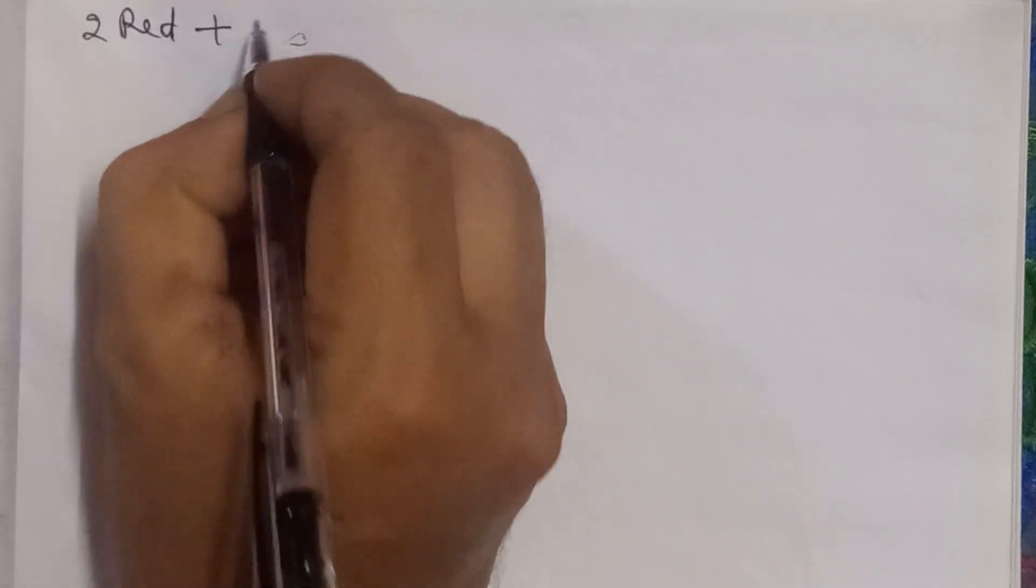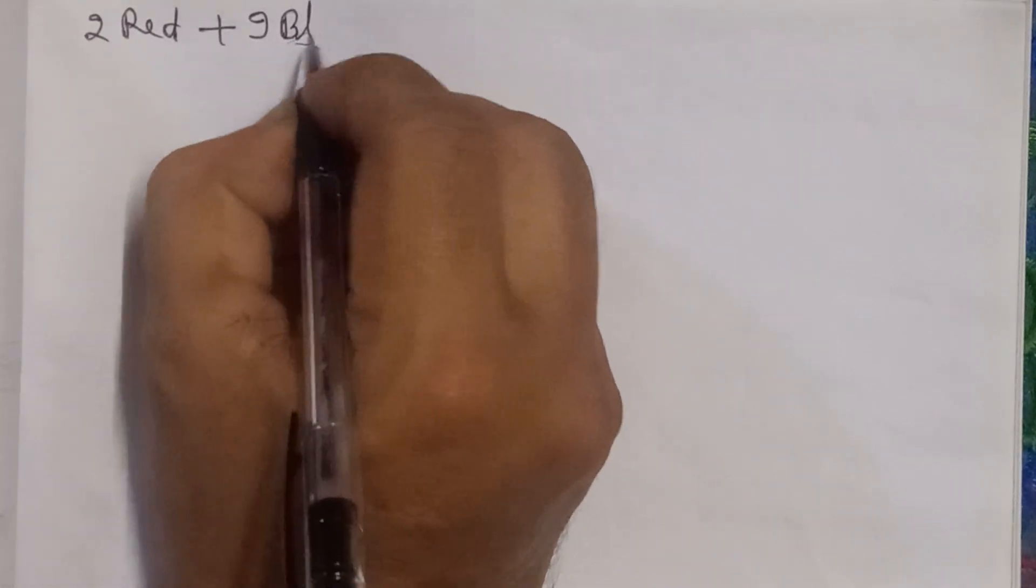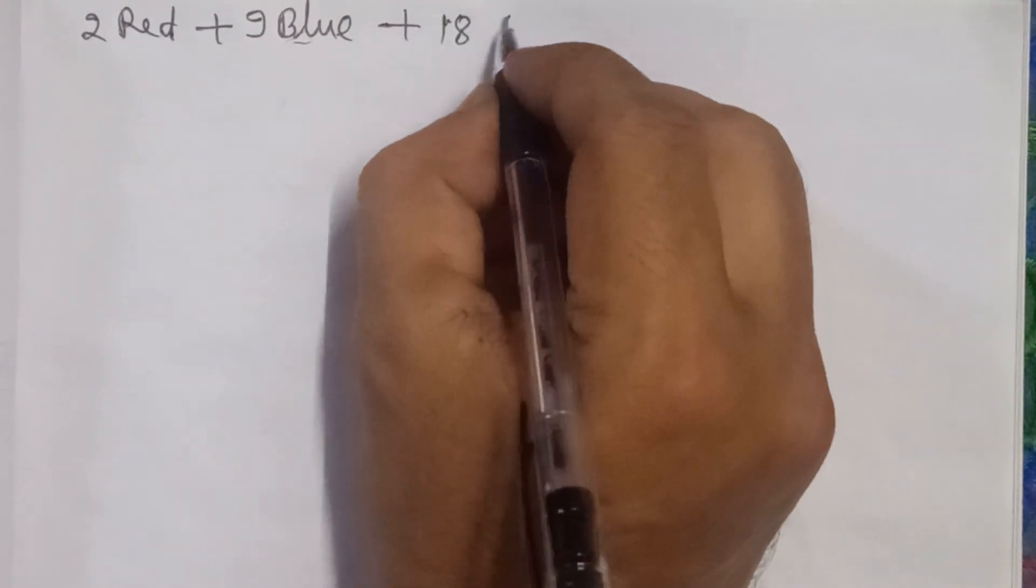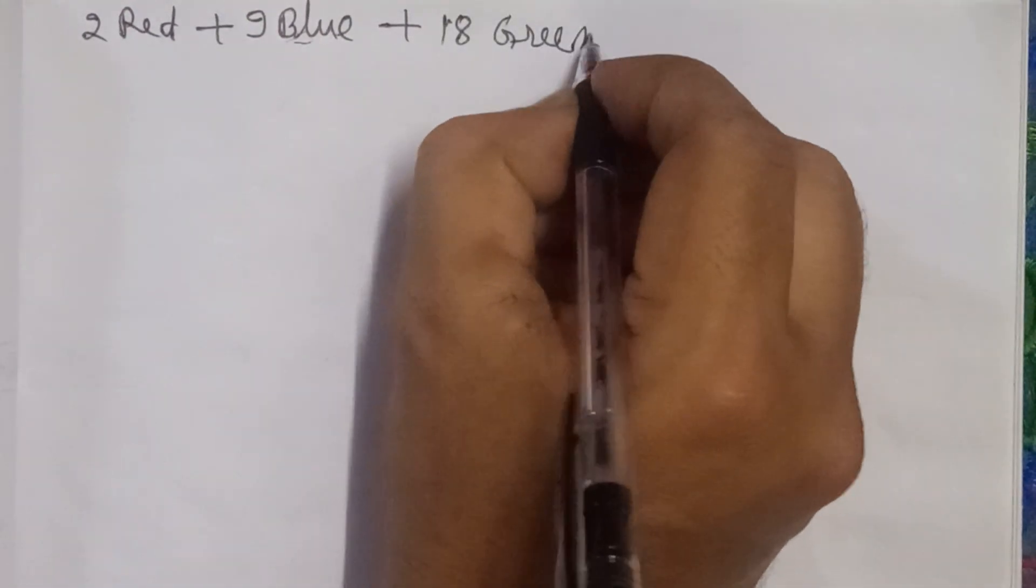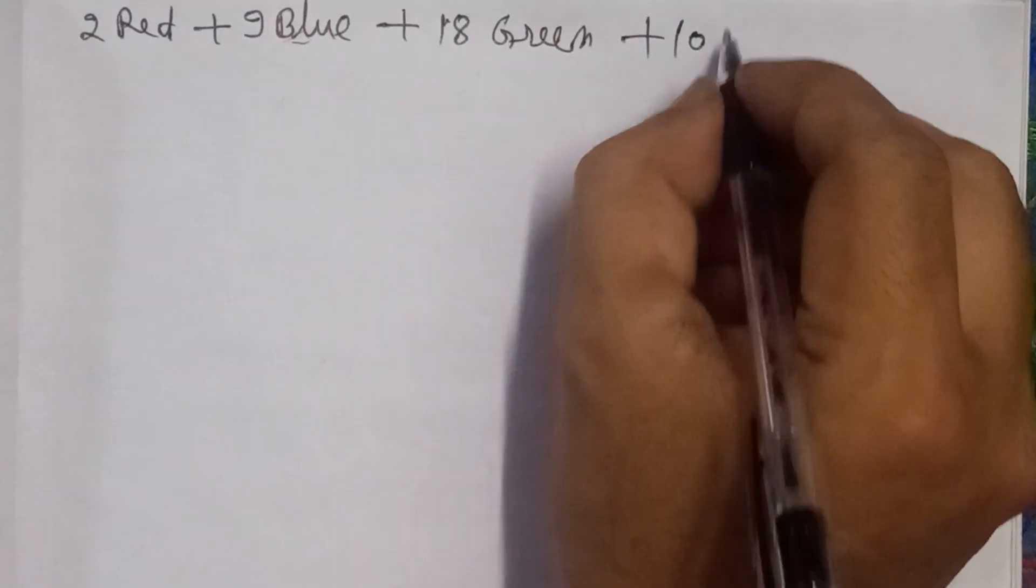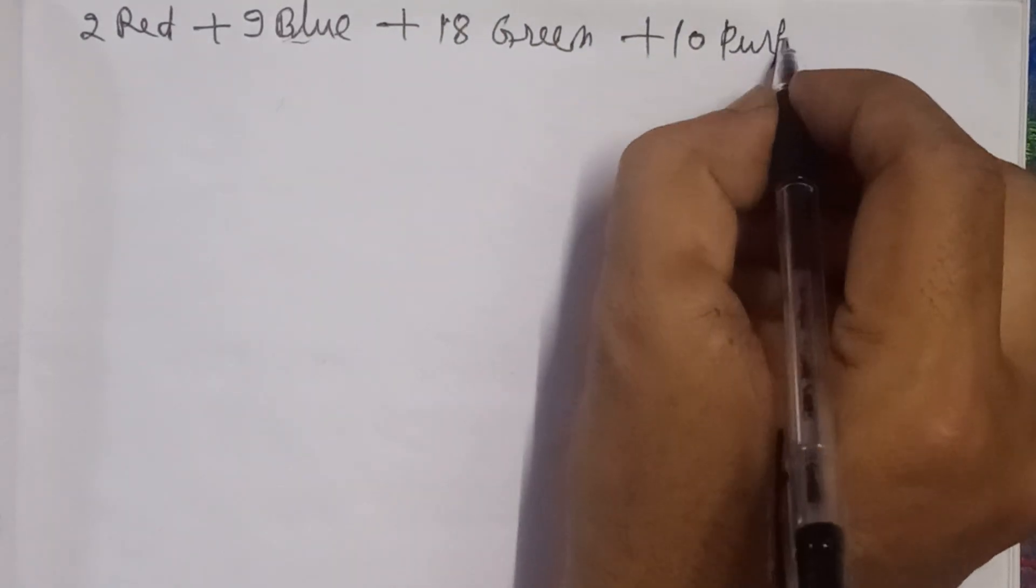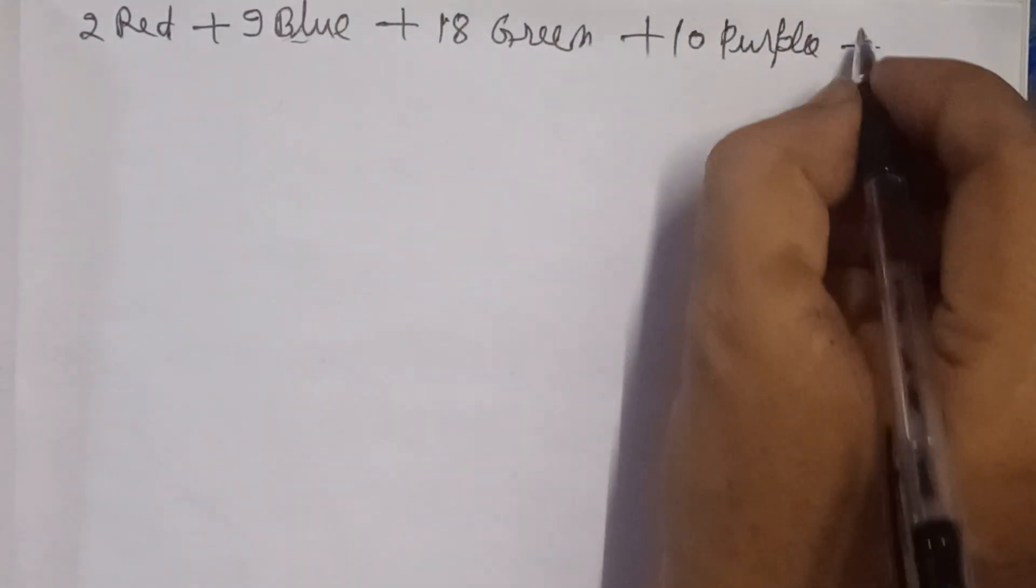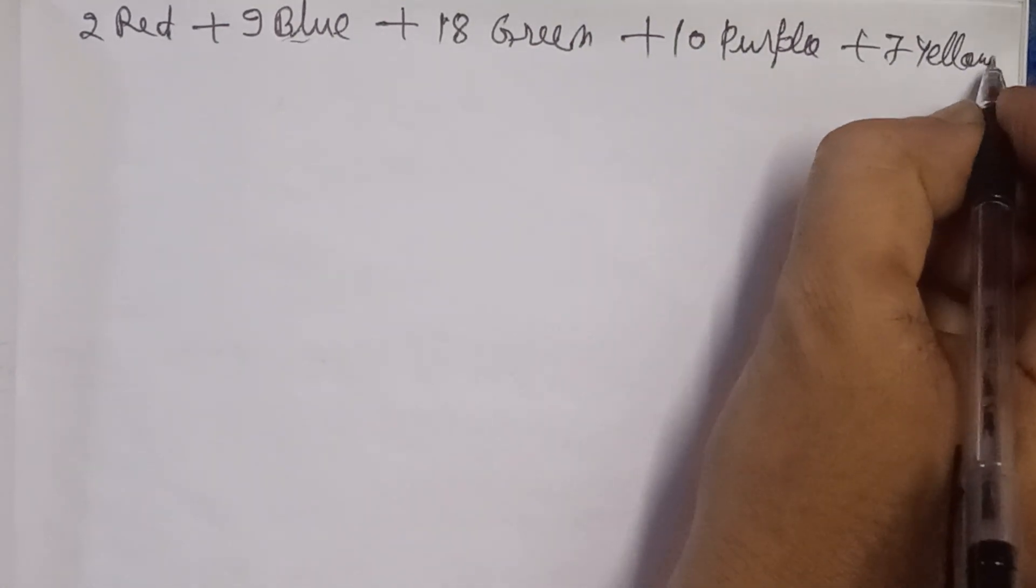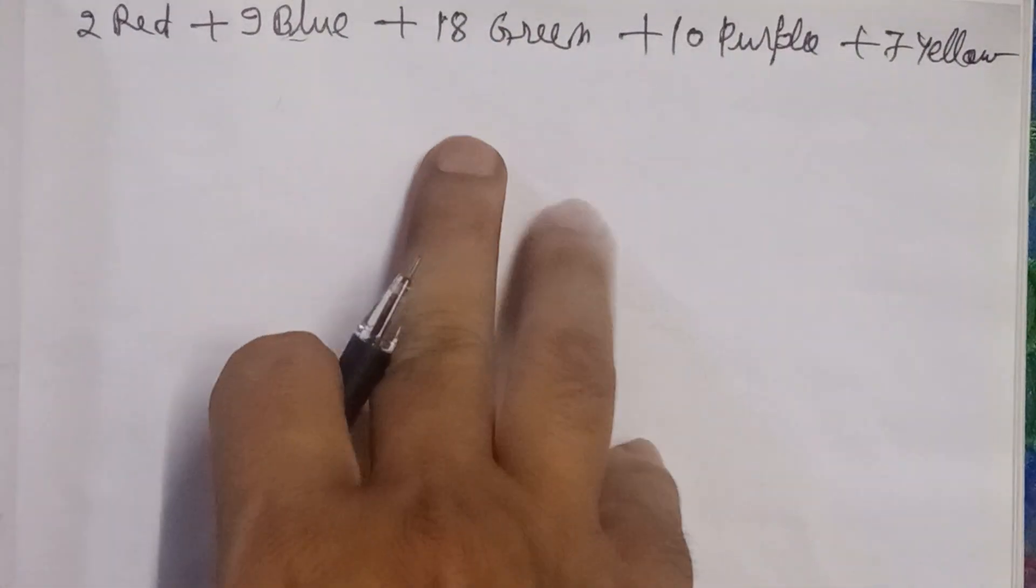So first we need to see in the solution, which we're writing on the next page here, how many marbles there are and what colors they are. So first we see there are 2 red marbles, 9 blue marbles, and 18 green marbles,